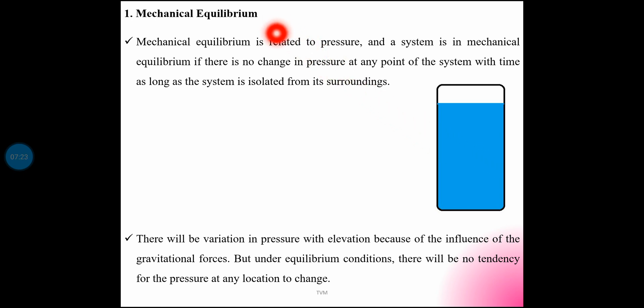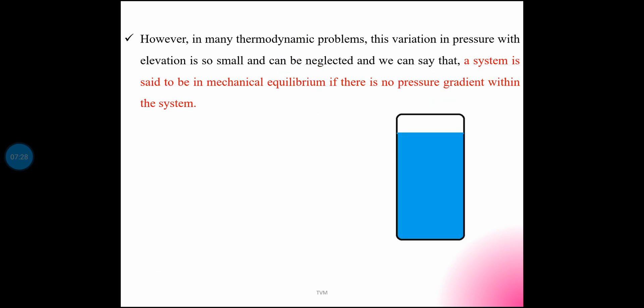For thermodynamic analysis, this elevation change — meaning height change — causes a pressure variation that is normally neglected. In many thermodynamic problems, this variation of pressure with elevation is so small it can be neglected. We can say that a system is in mechanical equilibrium if there is no pressure gradient within the system — that is, the same pressure throughout the system at all locations.